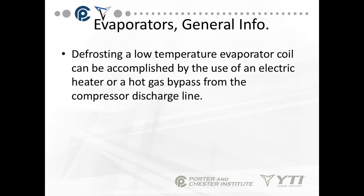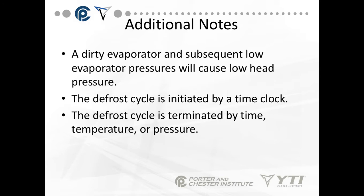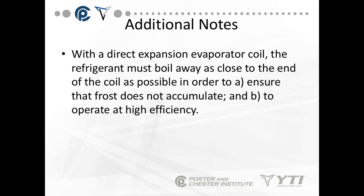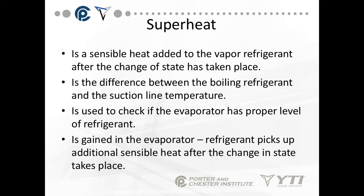Defrosting a low temperature evaporator coil can be accomplished by use of an electric heater or a hot gas bypass from the compressor to the discharge line. A dirty evaporator and subsequent low evaporator pressures will cause low head pressure — remember, head pressure is your high side pressure. The defrost cycle is initiated by a time clock and can be terminated by time, temperature, or pressure. With a direct expansion evaporator coil, the refrigerant must boil away as close to the end of the coil as possible to ensure frost doesn't accumulate and the evaporator continues to operate at high efficiency.